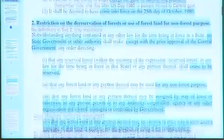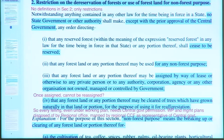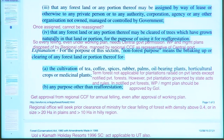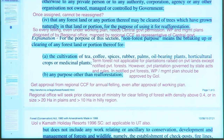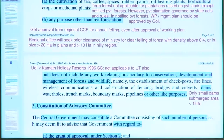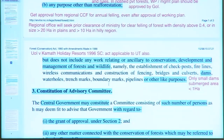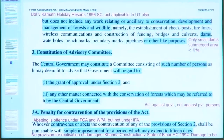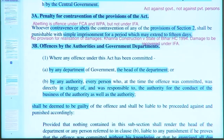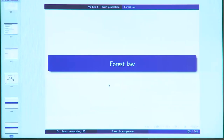The Forest Conservation Act, section 2, restricts de-reservation of forest or use of forest land for non-forest purposes — it is a restriction, not a ban. Non-forest purpose is defined as breaking up or clearing forest land for cultivation of tea, coffee, spices, rubber, palm, oil-bearing plants, horticultural crops, medicinal plants, or any purpose other than re-forestation; it does not include work relating to conservation, development, and management of forest and wildlife. The penalty for contravention is simple imprisonment for up to 15 days.